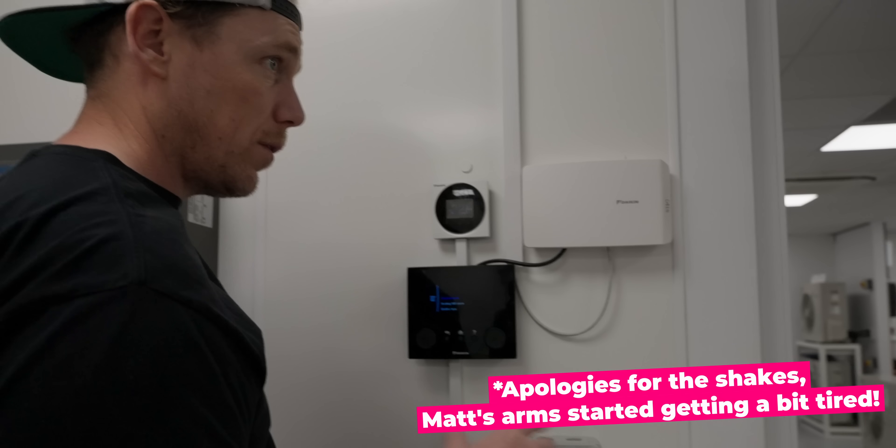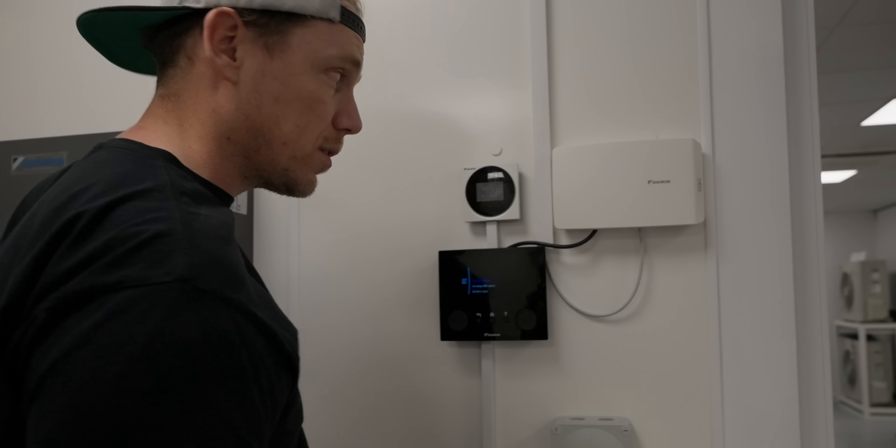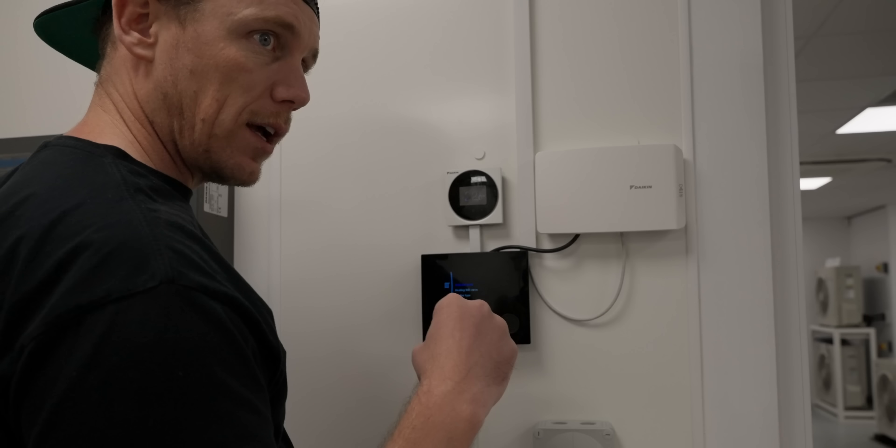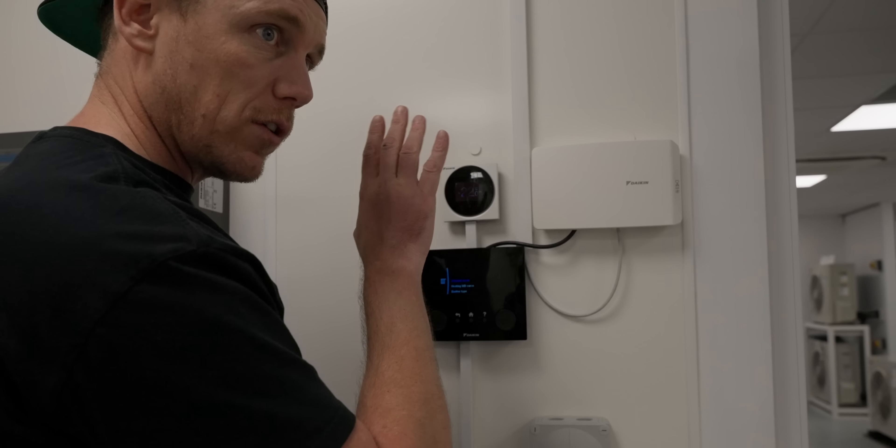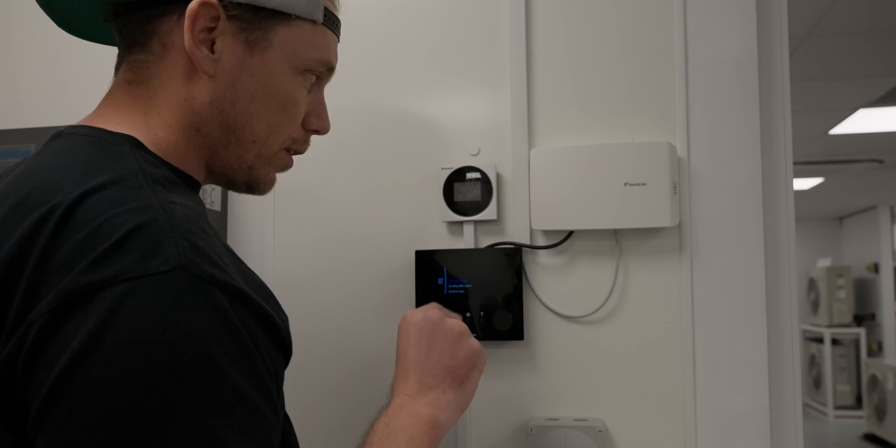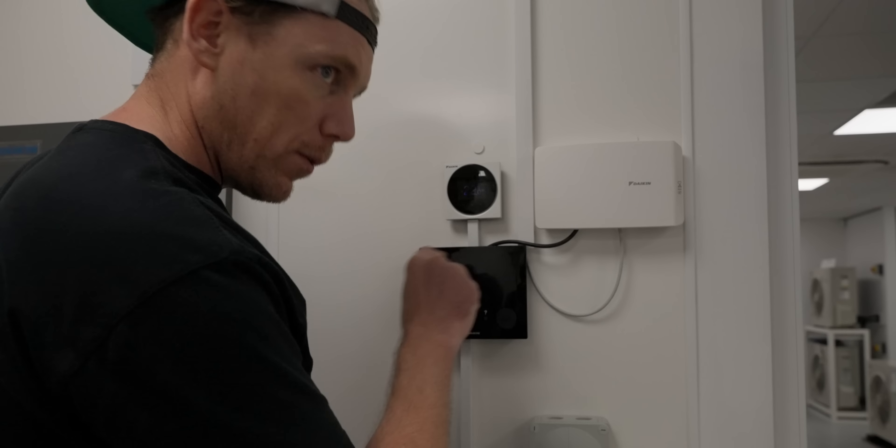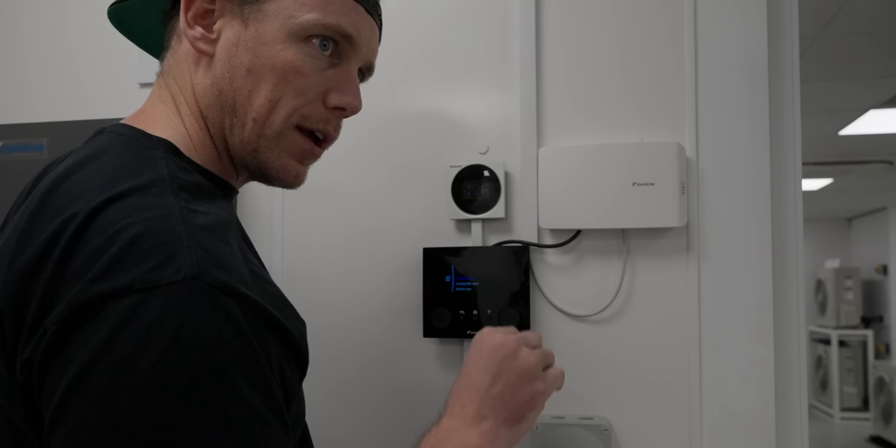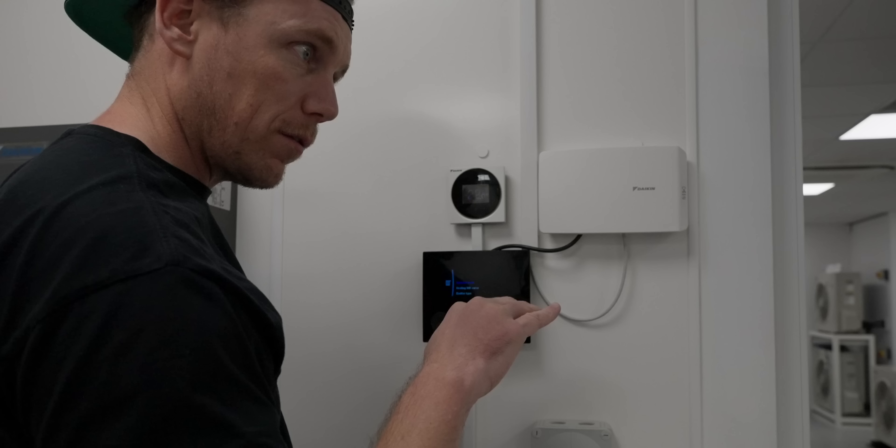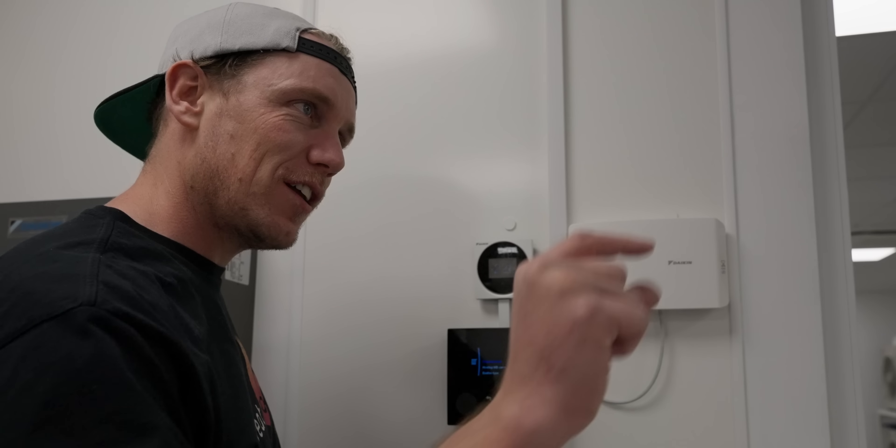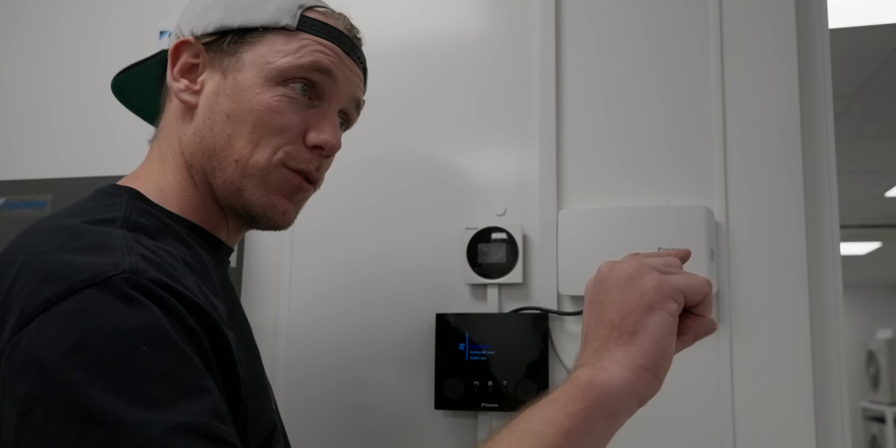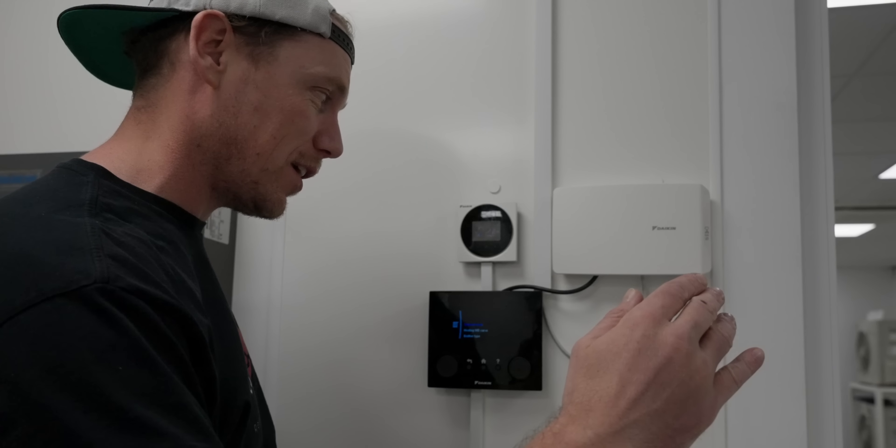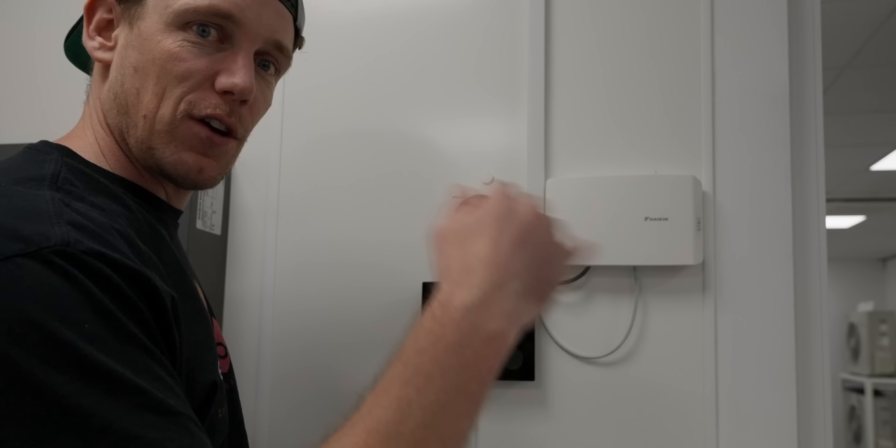The way we would advise to set up a system would be for the first six months, turn all of your individual room stats, even if it's on the floor, to 35 degrees room temperature. Then if you're too warm we go in, dial down your curve. We play around with the curve till the curve gets them to 20-21. Then we'll turn the room thermostats down to one or two degrees above the weather compensated temperature so they'll act as an overheat limit.